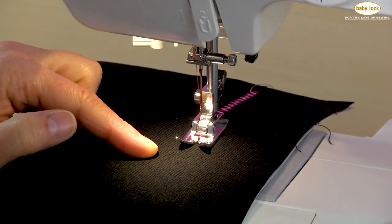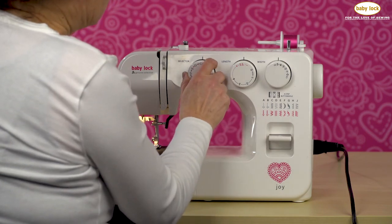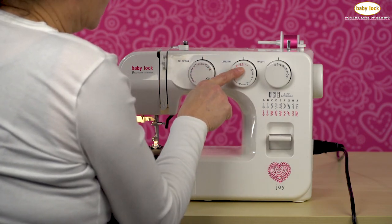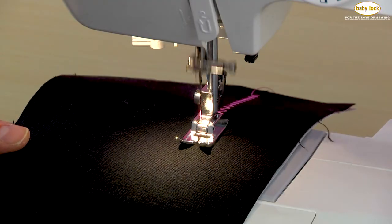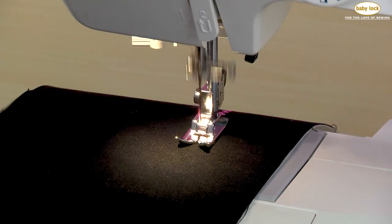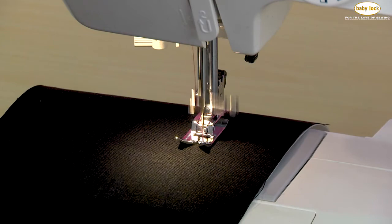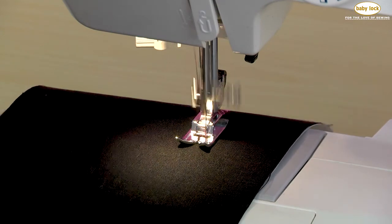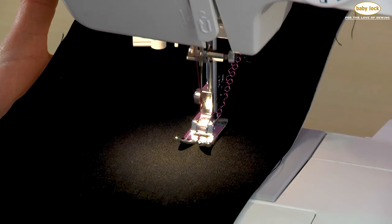I'm now going to flip over to stitch number D. Again, I'm still on that stretch stitch setting, and I'm going to still leave that width at 5. And this is what I would call a smocking stitch or a kind of faux honeycomb stitch, but I would consider it more of a smocking stitch. And we'll stitch down using this stitch for a little ways.